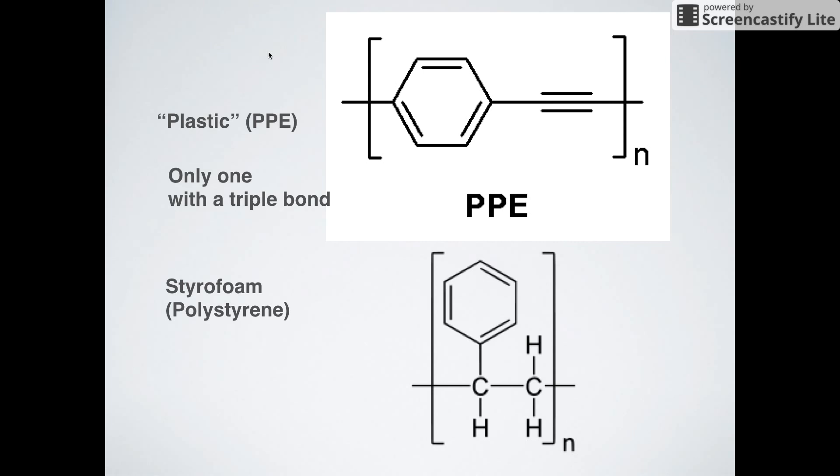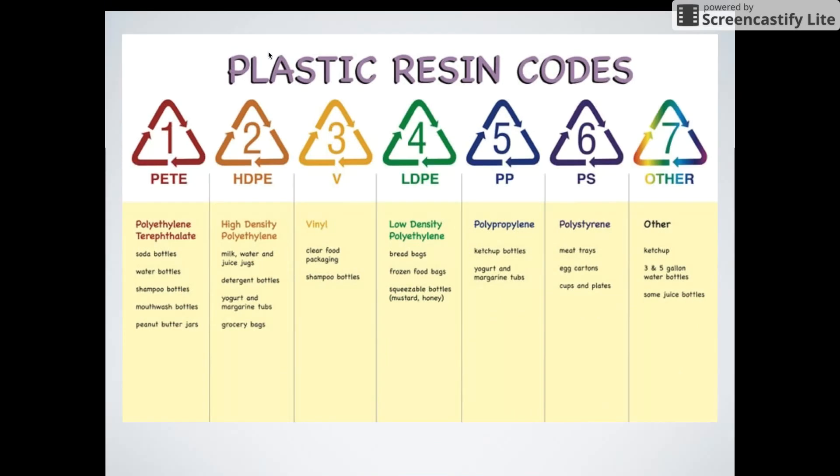Styrofoam looks similar to the others - it has a ring, but there's nothing really setting it apart. If you know the first three, the last one is polystyrene or styrofoam. These are the resin codes - you don't need to know them, but they're in your notes in case you see them on a water bottle or plastic container. They indicate the type of plastic resin.